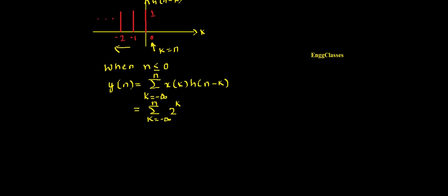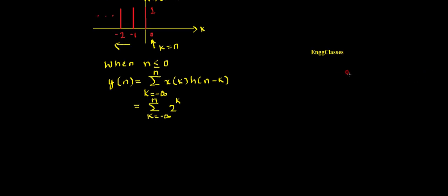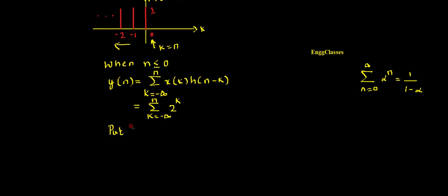To convert this to the standard form of the geometric series — summation n equal to 0 to infinity of alpha to the power n equals 1 divided by 1 minus alpha — I need to do a variable substitution. Let l equal to minus k, so I am changing the limit variable from k to l. The lower limit k equal to minus infinity becomes l equal to plus infinity, and the upper limit k equal to n becomes l equal to minus n.